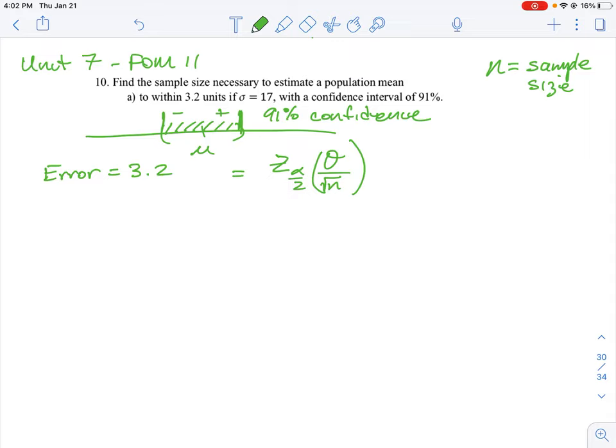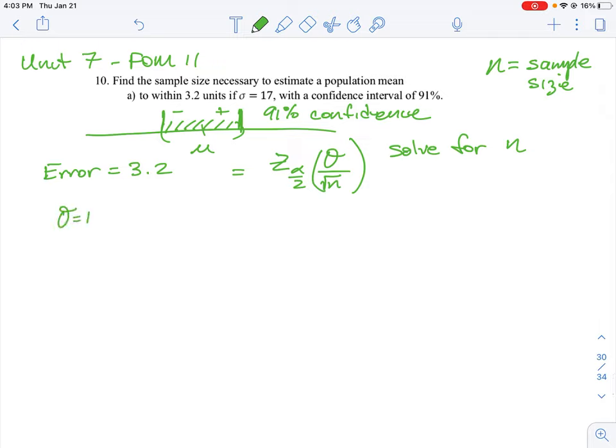All we're really having to do here is solve for n. The first thing is we know our standard deviation, it's been given as 17. We don't know the mean of the values, but we don't really need it because we're estimating around the population mean. n is what we're going to have to find.